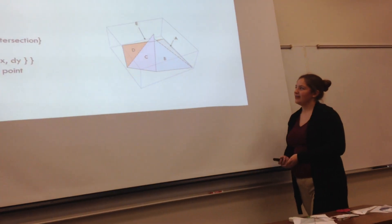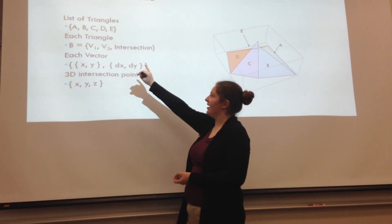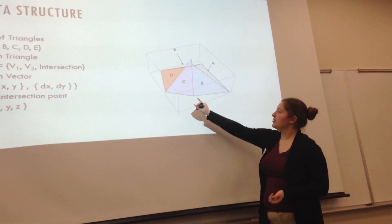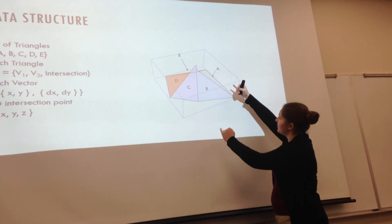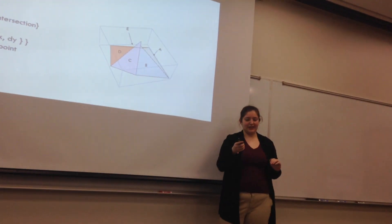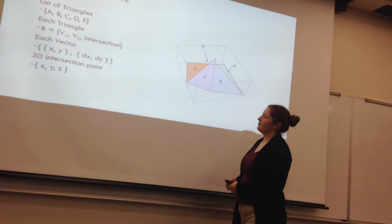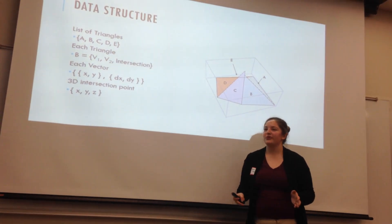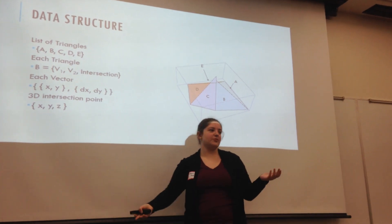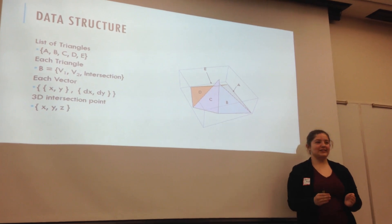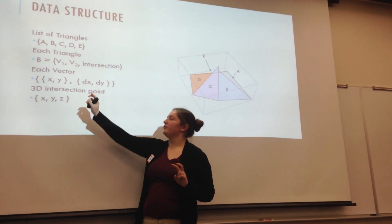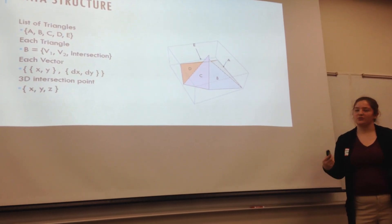When storing these triangles, we store a list of triangles where each triangle is made up of two vectors — which are the angle bisectors — and a 3D intersection point. We store them as 2D vectors and a 3D intersection point. Each vector is a composition of an initial point and a change factor, representing how far the vector moves in the x and y axes over one time step. The magnitude of this vector represents the speed.